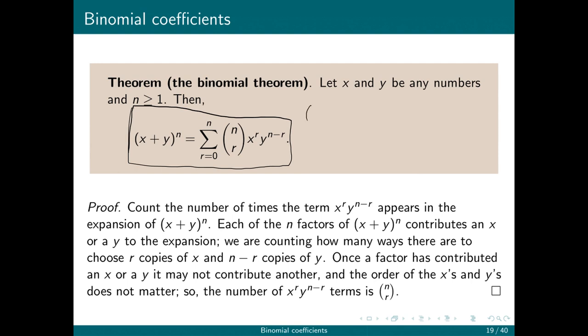So here's the example we just did. x plus y cubed is 3 choose 3 times x cubed plus 3 choose 2 times x squared y to the 1 plus 3 choose 1 times x to the 1 y squared plus 3 choose 0 y cubed. And then what we just saw is that that's x cubed plus 3 x squared y plus 3 x y squared plus y cubed.